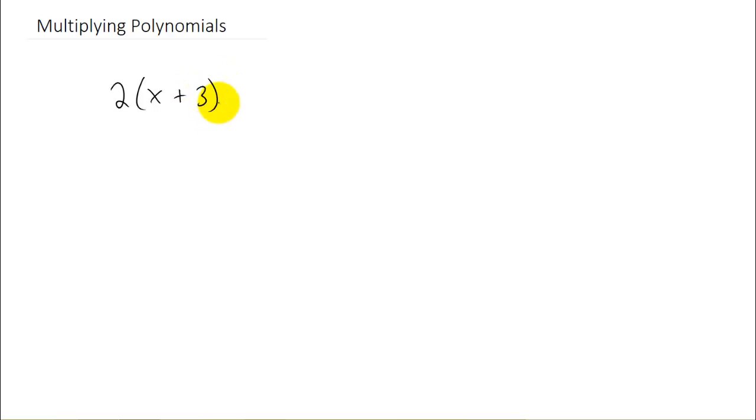You don't normally think of this as multiplying polynomials, but technically you're taking 2, which is a monomial, and you're multiplying it through a binomial, in this case x plus 3. Now we already know how to do this. What you do is you just take the 2 and you distribute it through the parenthesis. So you do 2 times x, which is 2x, plus 2 times 3, which is 6.